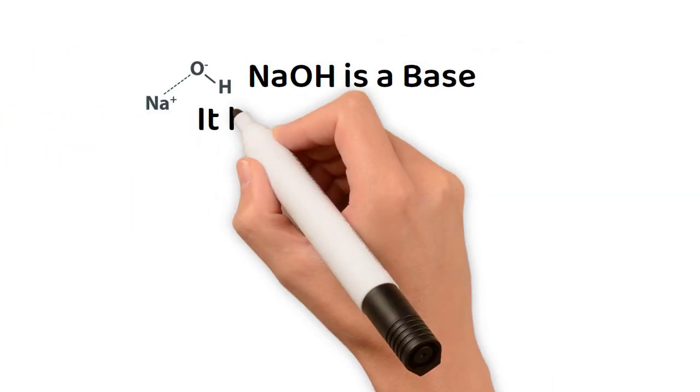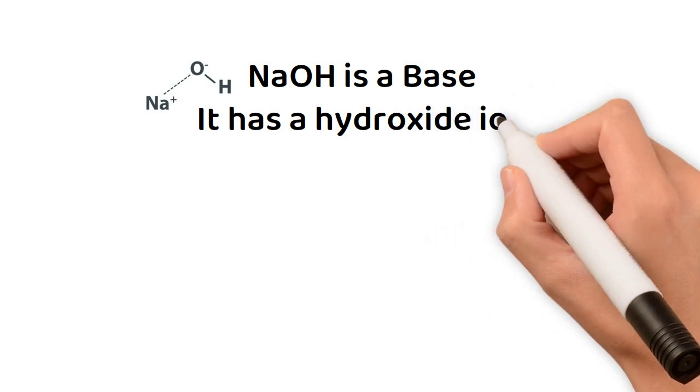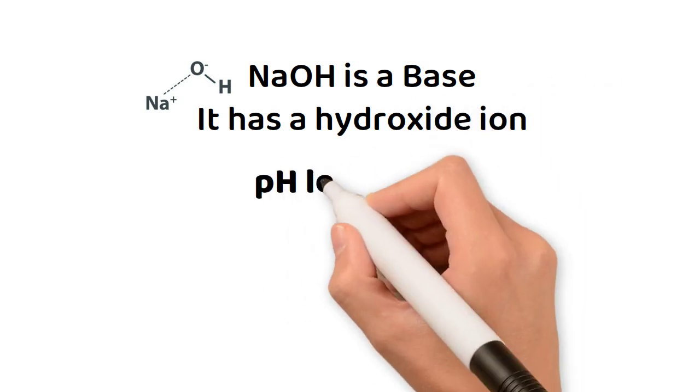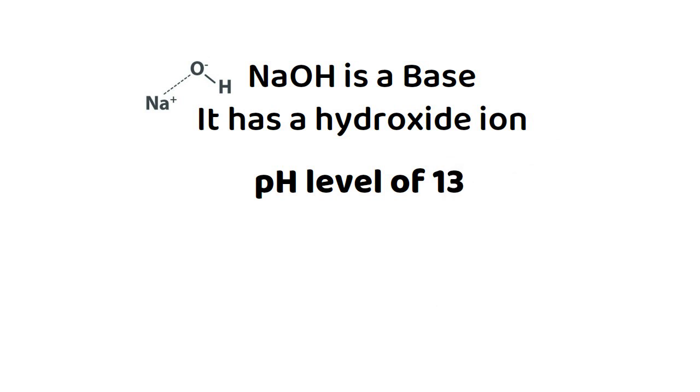NaOH is a base because it has a hydroxide ion. It is also a particularly strong one. It has a pH level of 13.